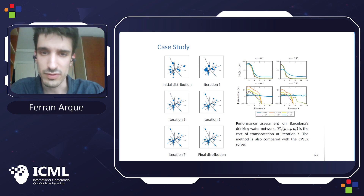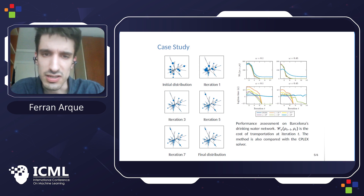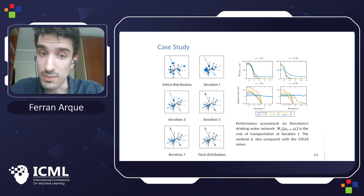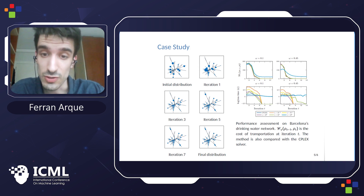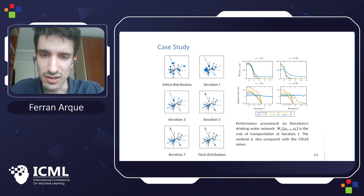At the top we see the cost of transportation at each step, and except for very high regularization, the transportation is, in all cases, very close to the CPLEX solution. Also, at the bottom we have the running time of each iteration, and we see the known issue with these entropy-regularized approaches, which is that for very low regularization, the computational speed significantly decreases.